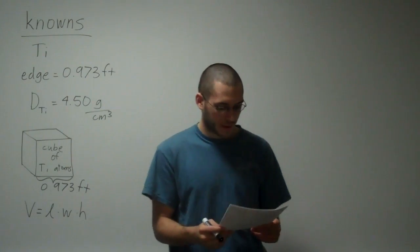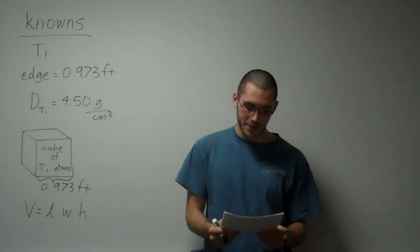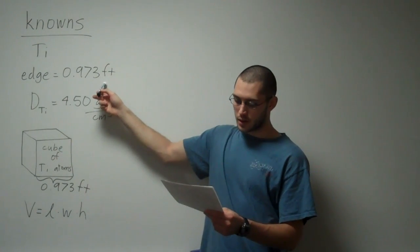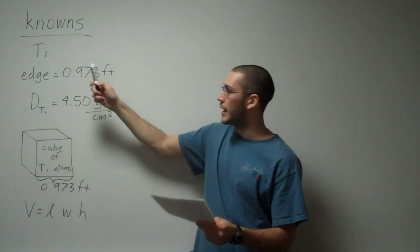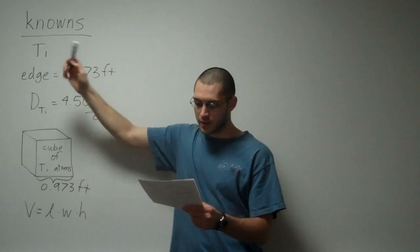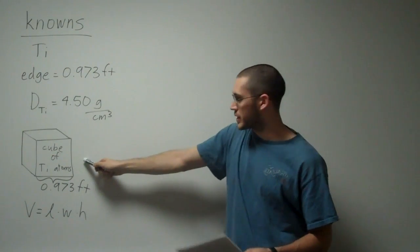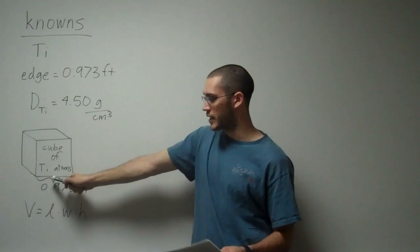We are going to do number 5. It says a pure titanium cube has an edge length of 0.973 feet, and it asks how many titanium atoms does the cube contain. So I've drawn a picture, because pictures always help me. I have my cube of titanium.